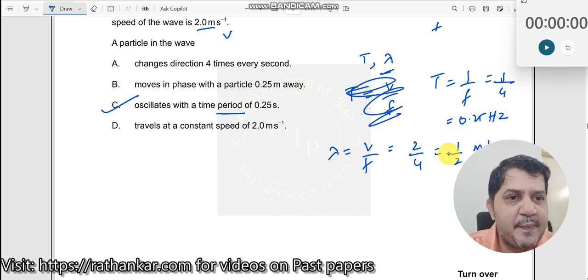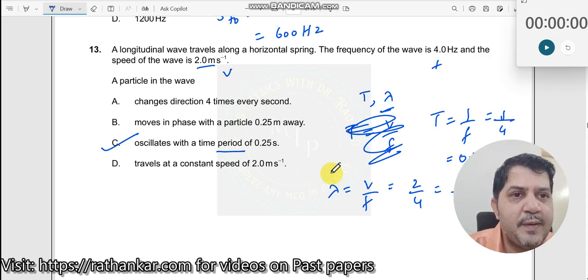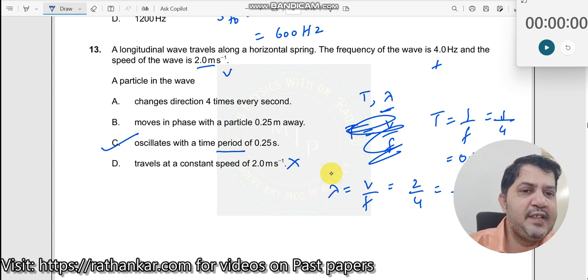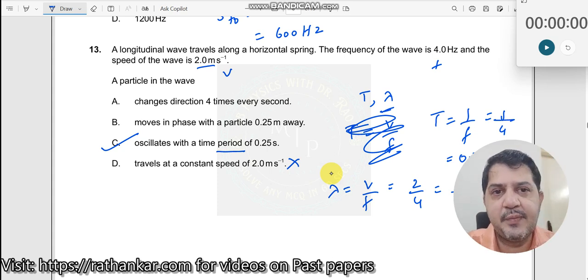Travels at a constant speed of 2 meter per second. Constant speed of 2 meters per second. A particle, particle does not travel at the same speed. So therefore this is incorrect. Therefore C is the right answer. Though we have got one of the answers correct, we need not bother. Let us solve them to get started.